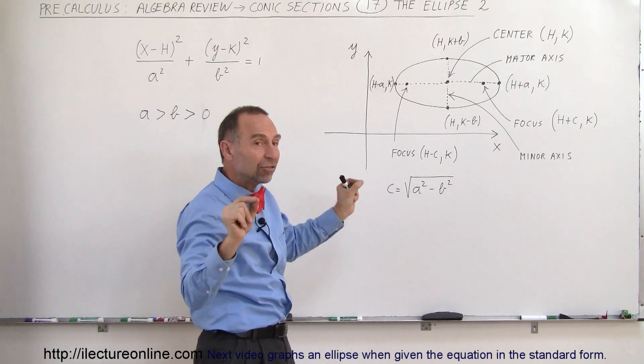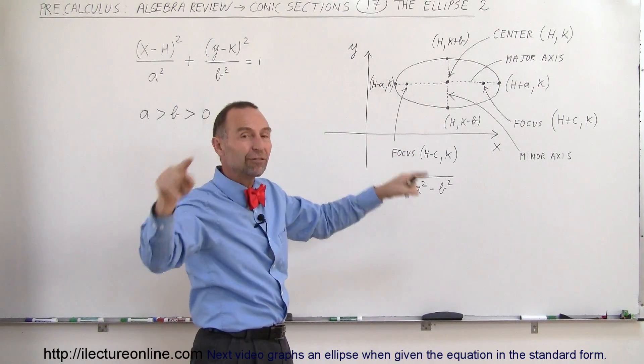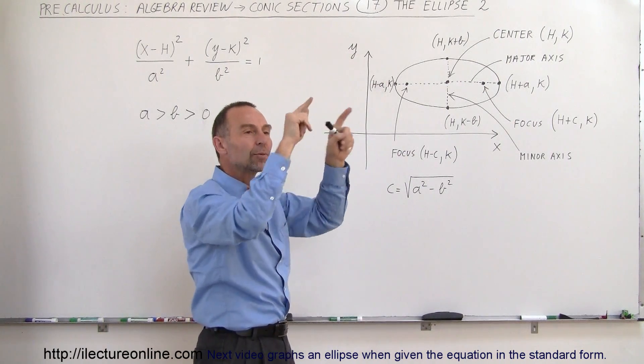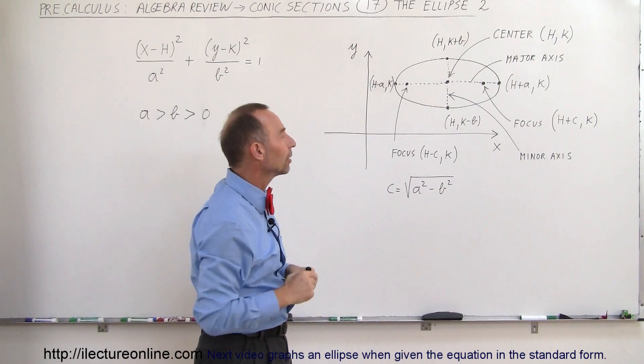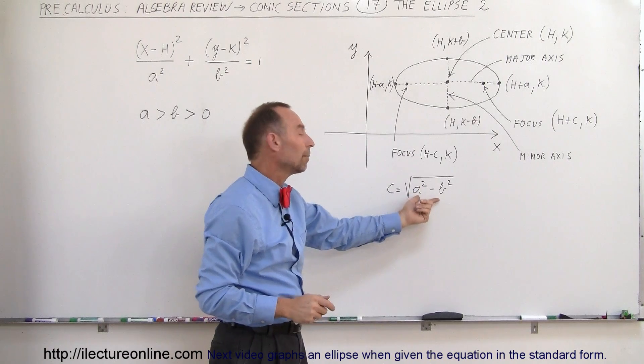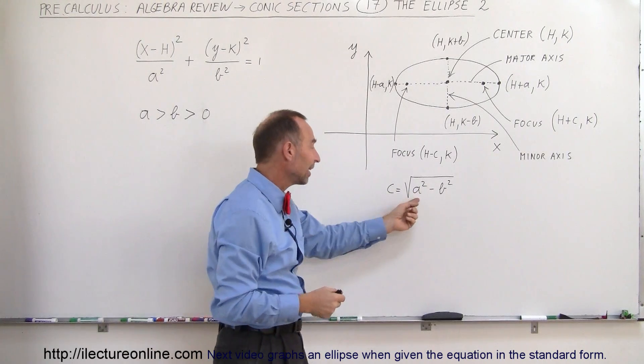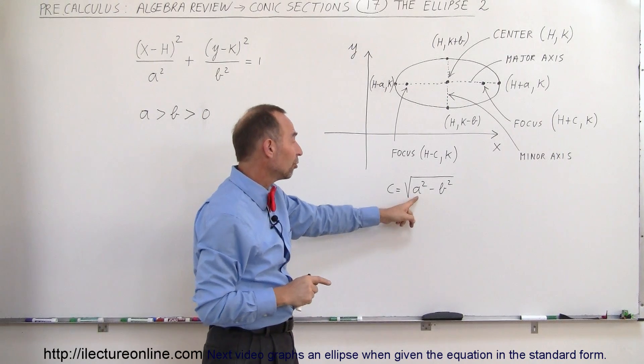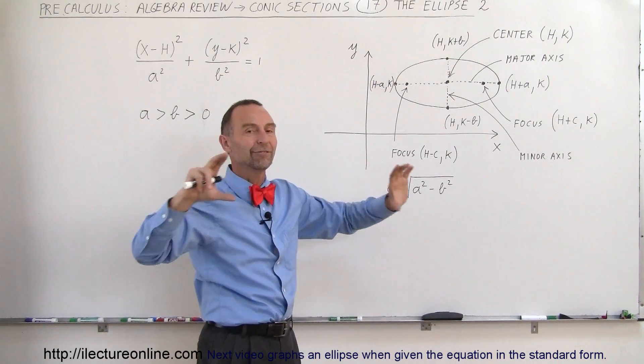If the foci are very close to the edge of the ellipse, then it's a very flattened out ellipse. If the foci come very close to the center, then the ellipse becomes much more closely resembling a circle. And again, c is equal to the square root of a² minus b². When they become equal, you have a circle. When they're slightly different from each other, it's just slightly off from being a circle. If a is much, much bigger than b, then of course it's a very flattened ellipse.